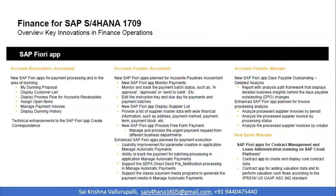When you launch your SAP Fiori app, you will find various roles for different responsibilities. The accounts receivable accountant role focuses on dunning proposals, displaying customer lists, showing the process flow for accounts receivable, and assigning open items. The payable accountant has a different set of roles and responsibilities, which can be controlled using the security framework of S4 HANA 1709. The new SAP Fiori app helps you monitor payments and track payment batch statuses such as approvals or central bank processing, edit instruction keys, display supplier lists, and manage automatic payments.